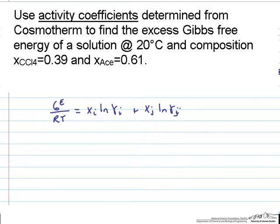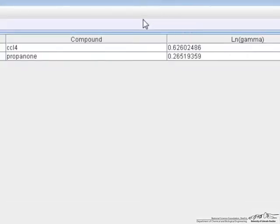So in this case if we call component 1 carbon tetrachloride, gE over RT is equal to 0.39 times the ln of gamma for carbon tetrachloride. In Cosmotherm, the ln of gamma is 0.626, so I'll write that down times 0.626